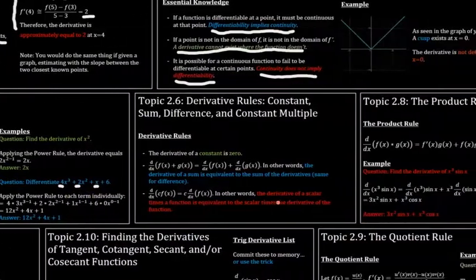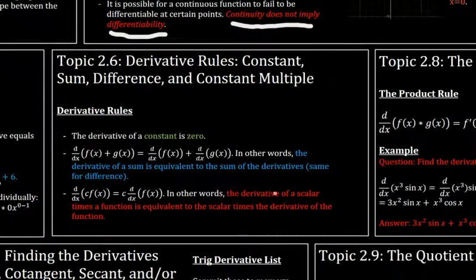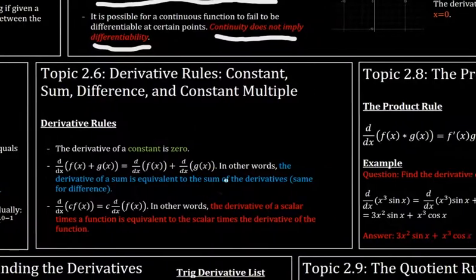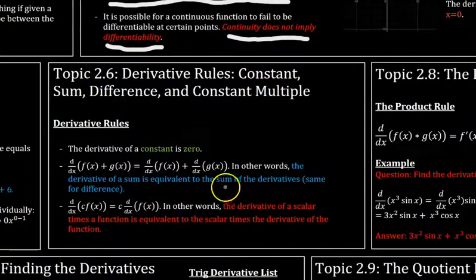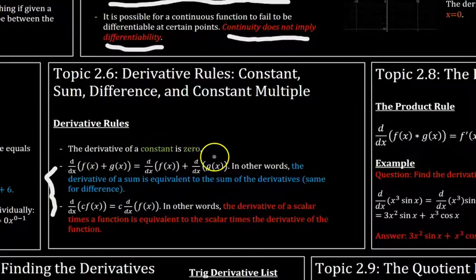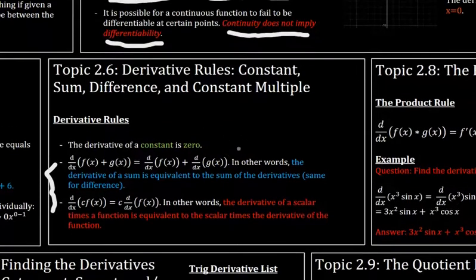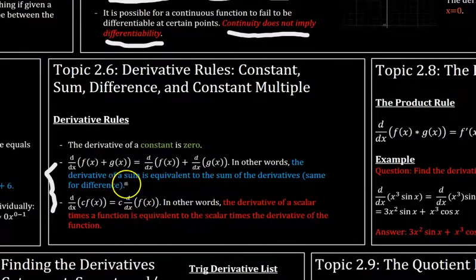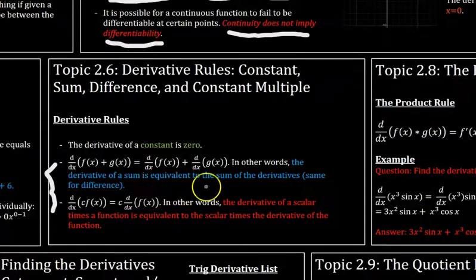Now on to topic 2.6. This is mostly trivial stuff. So it just says that the derivative of a sum or a scalar is the sum of the derivatives or the scalar times the derivative. So those are the second and third points right here. And then the first point is that the derivative of any constant, like just a single number, is always zero. So these are helpful to keep in mind. But I mean, it's kind of obvious. But yeah, so you have to understand these properties.